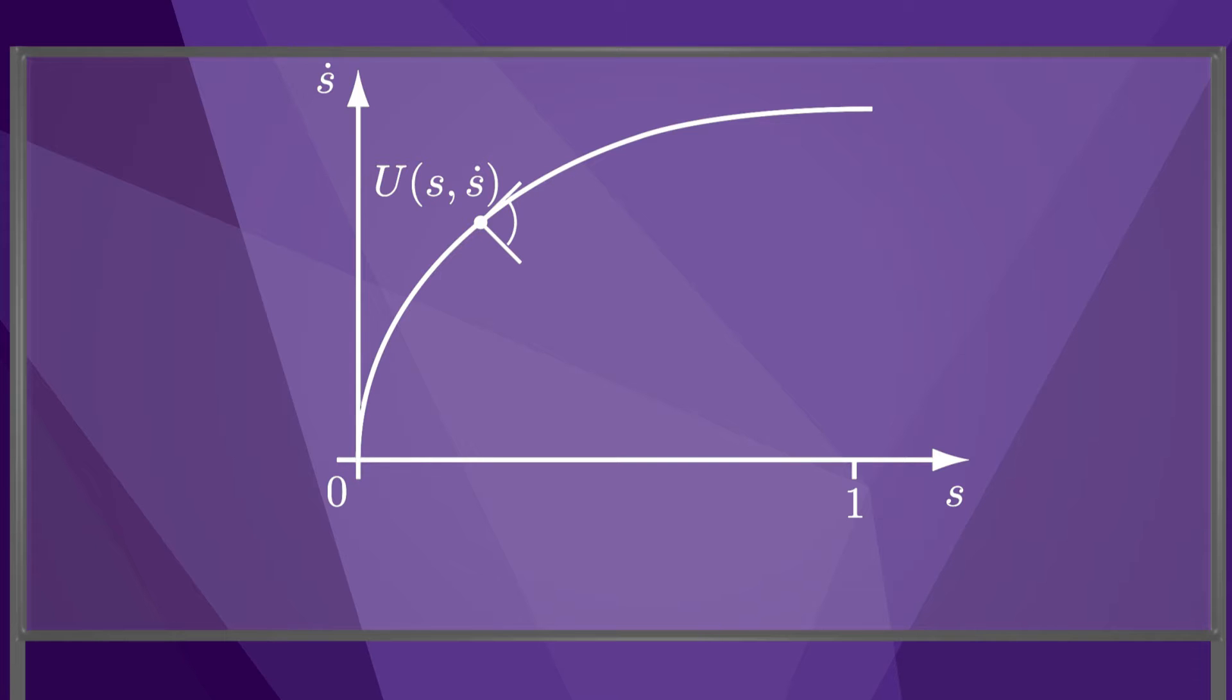Here you see a curve that is found by numerically integrating the maximum possible accelerations. Because this curve travels along the edge of the motion cones, at least one actuator is always operating at a limit. This time-scaling causes the robot to follow the path as fast as possible, but it does not bring the robot to a stop at the end of the path as required.